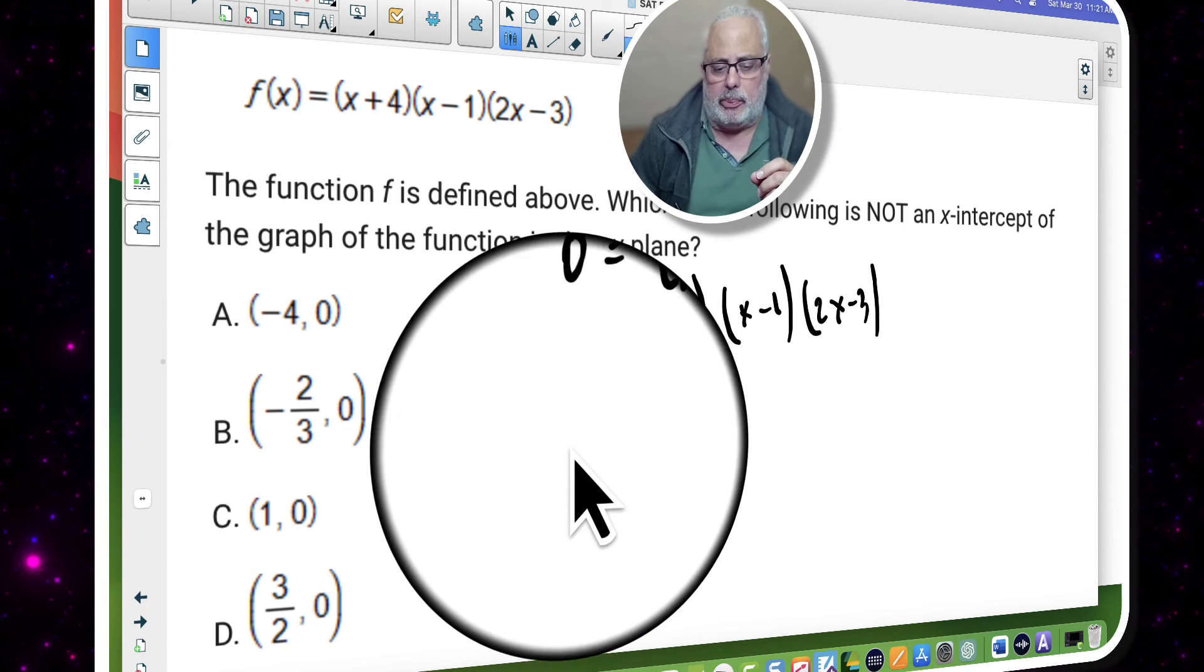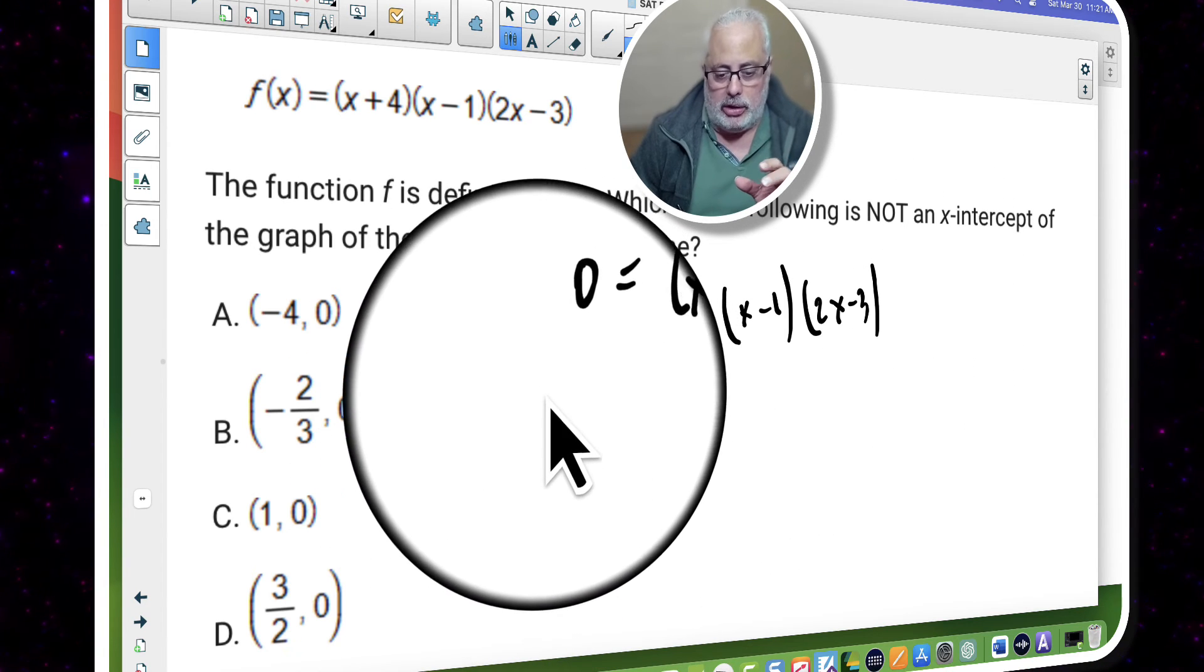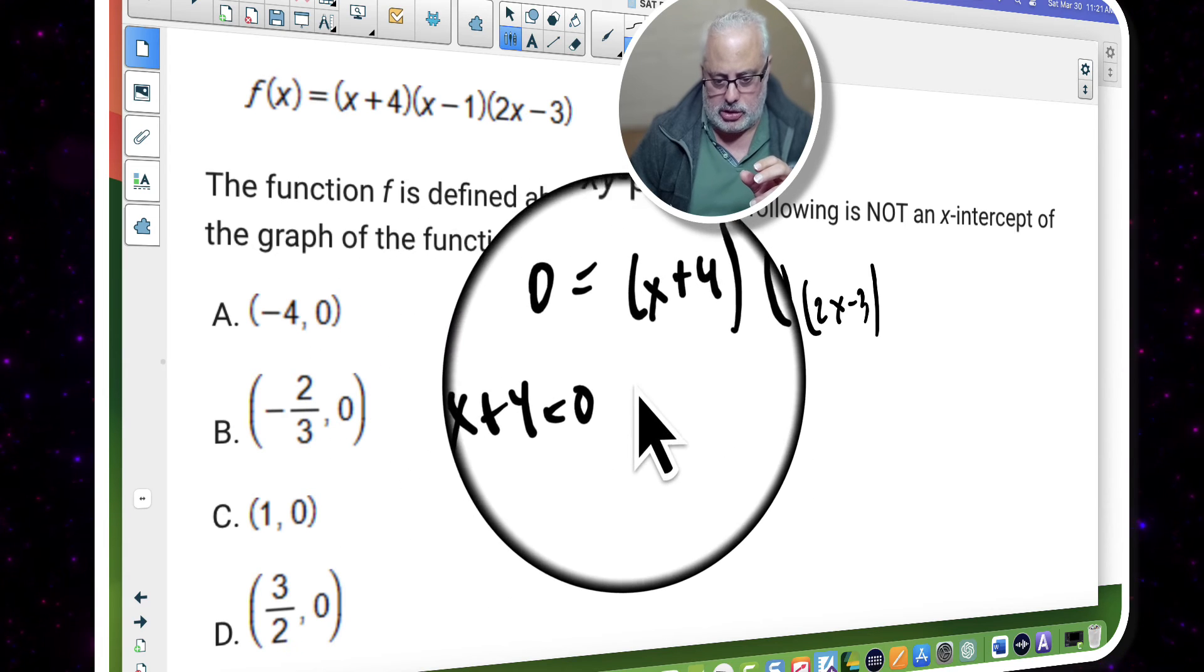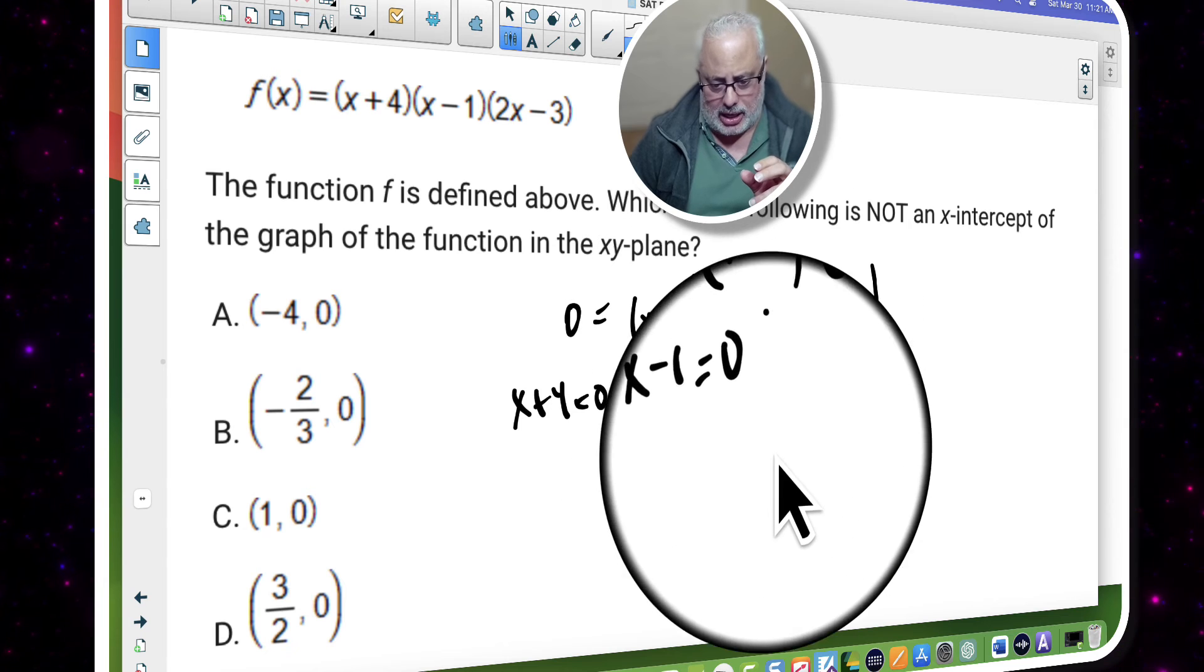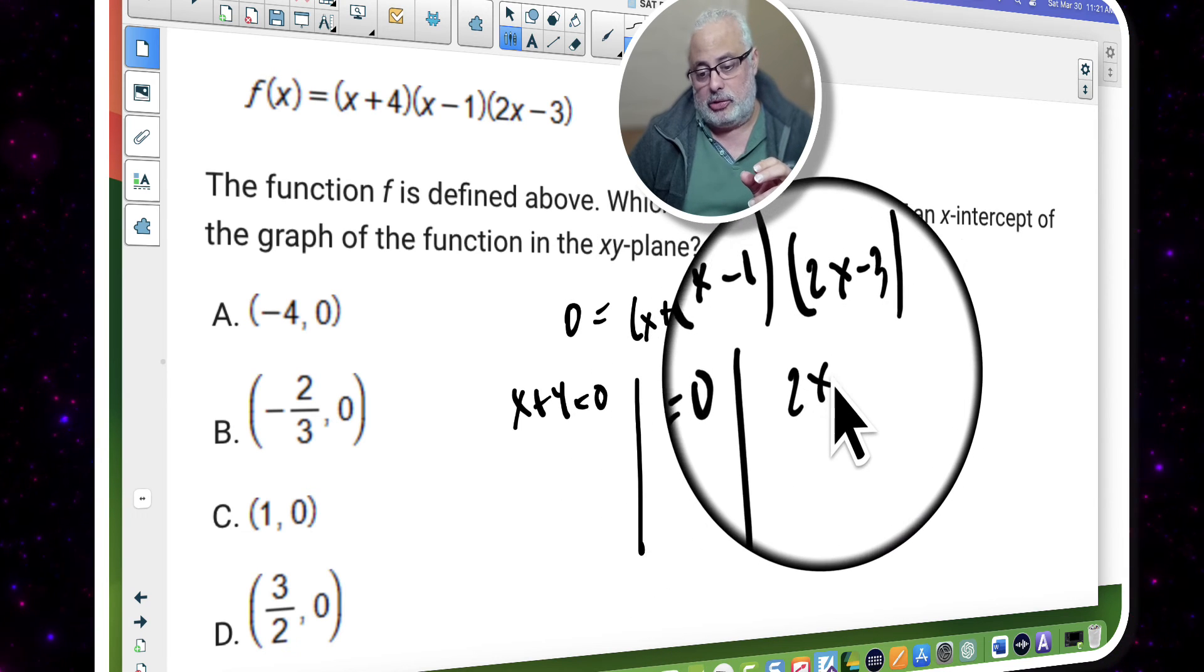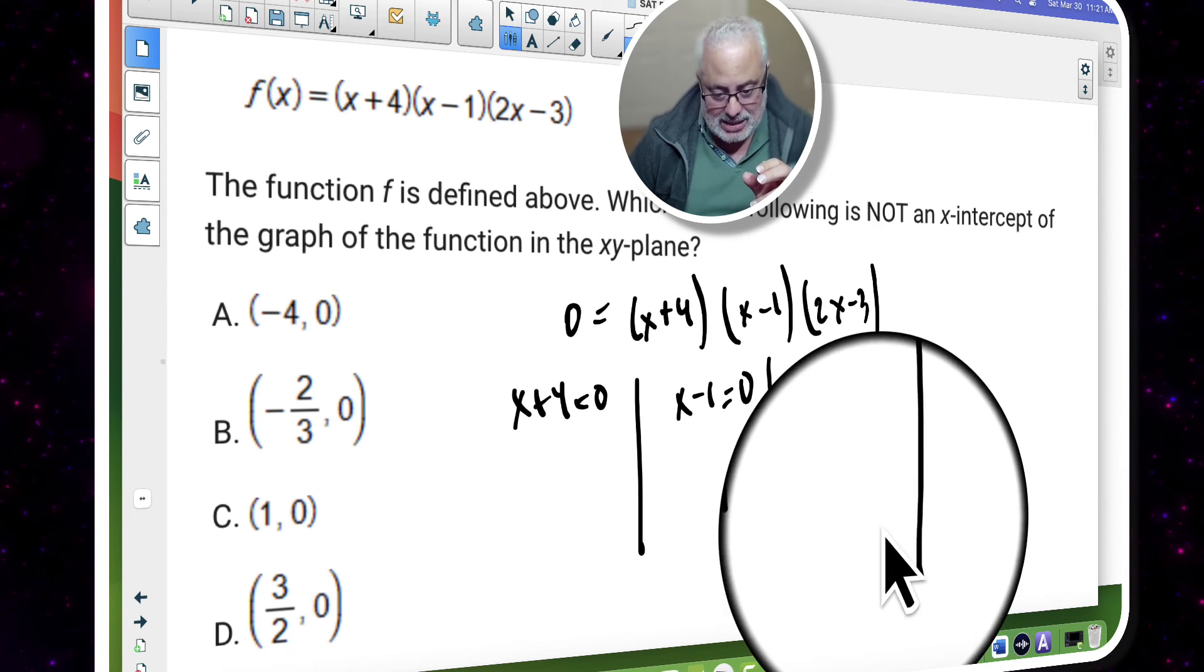This will separate your equation into x plus four equals zero, first equation, x minus one equals zero, second equation, two x minus three equals zero, last equation.